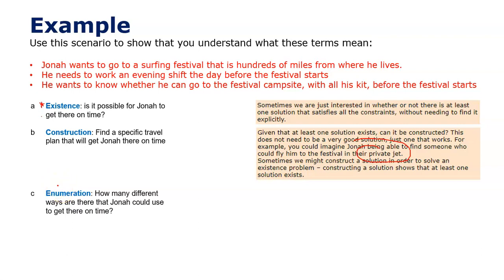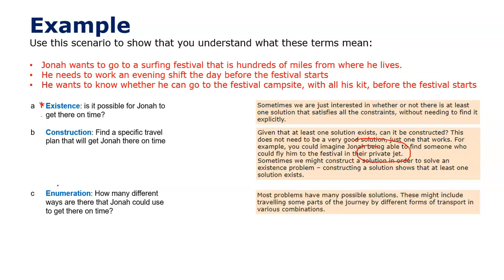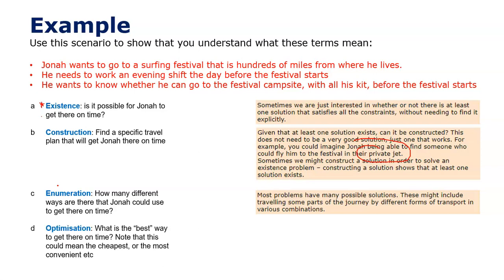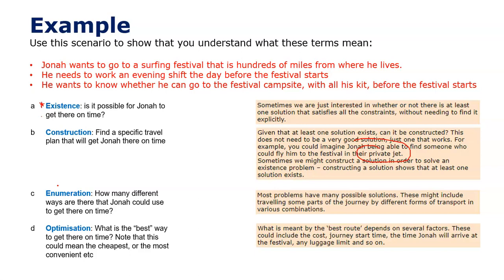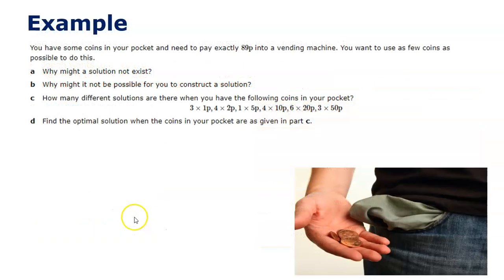Enumeration would count up how many different ways there are to get there — could be infinite, or given time constraints, perhaps finite or just one way. Optimization would ask: what's his best option? Is it the cheapest, most convenient, or quickest route? So all four types apply to Jonah's scenario, and these four words — existence, construction, enumeration, optimization — are what we keep returning to.